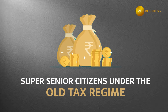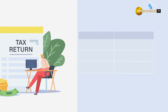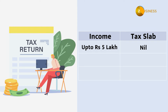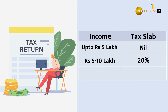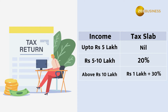Next, let's discuss income tax slabs for super senior citizens under the old tax regime. Super seniors pay zero tax up to Rs 5 lakh income. Between Rs 5 lakh and Rs 10 lakh, they pay 20% of income over Rs 5 lakh. Above Rs 10 lakh, they pay Rs 1 lakh plus 30% of income over Rs 10 lakh.